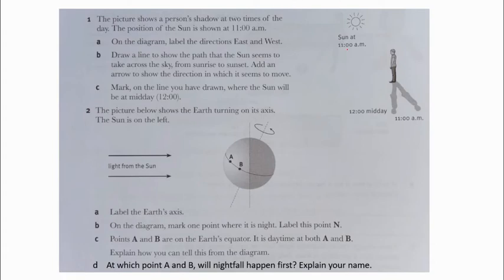Part A: On the diagram, label the directions east and west. Can you guess that when the sun is located in the upper left of the picture and the shadow is over here, where does the sun rise? The sun is coming from here, from the left.